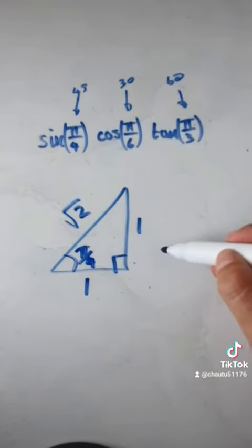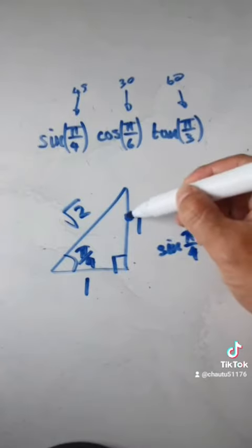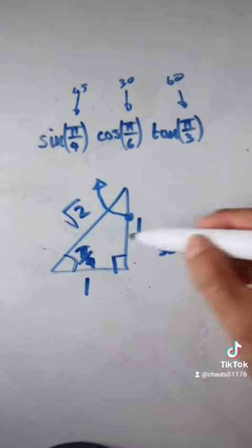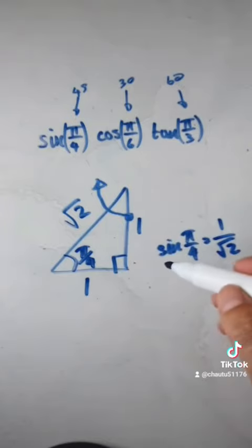So if you want to know sine of pi over 4, well, sine is this thing here. So which is this length, 1 over the hypotenuse, which is root 2.